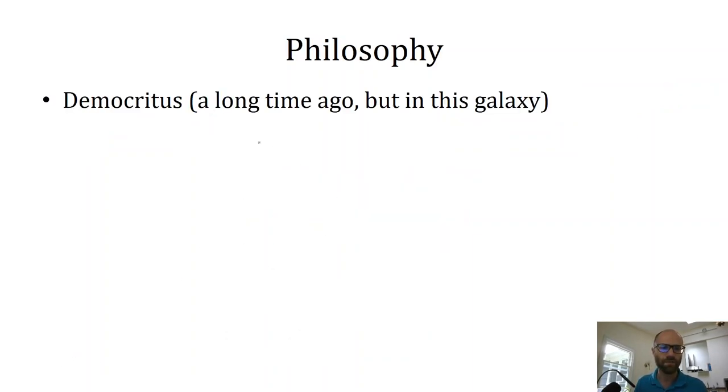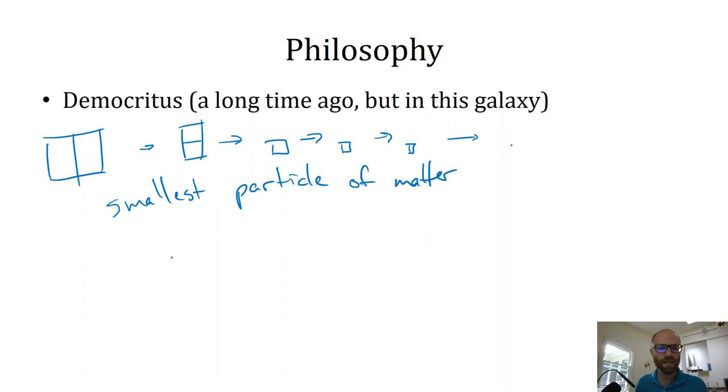Our first model of the atom is going to come from a Greek philosopher by the name of Democritus. When talking about matter, he hypothesized that one could divide a sample of matter and then take that division and then divide that sample of matter and then keep dividing that sample of matter into smaller and smaller pieces. And then eventually, there is a smallest particle of matter. And that smallest particle of matter is a representative of that matter as a whole, as in it has all the same property. And it was named for its property of not being able to be split. The atom literally means not splittable, not divisible.